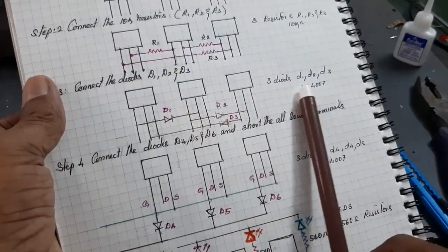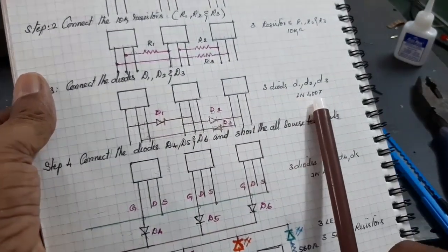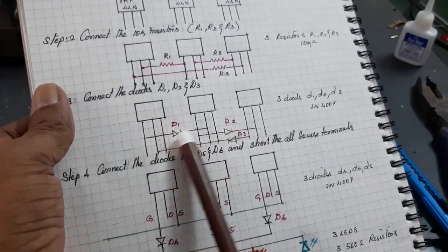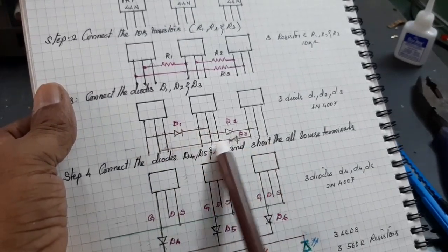Now, take 3 diodes IN-4007. The diodes are connected like this. 1, 2, 2. 1, 2, 2. 1, 2, 2.